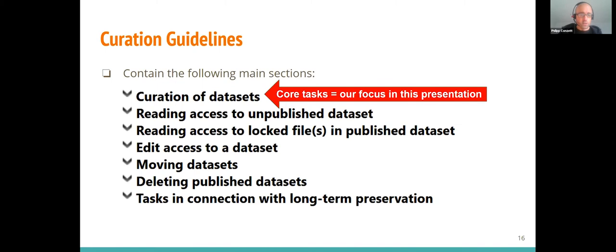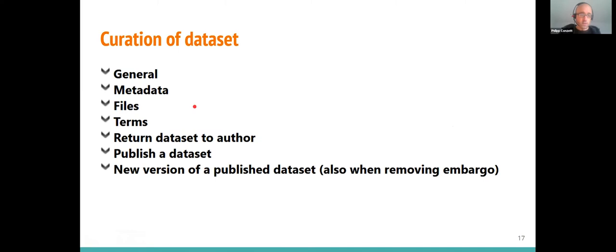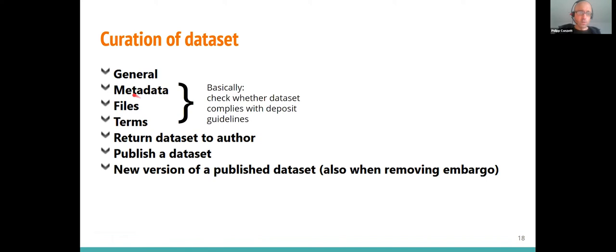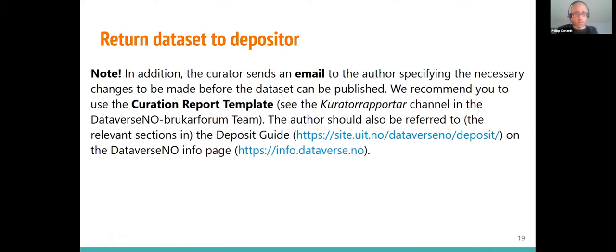The curation guidelines contain these main sections. The first section is about the core tasks of curation: a general introduction, then we talk about the metadata, the files, terms of use or licenses, returning the dataset to the author, publishing the dataset, and how to handle a new version of a published dataset. The metadata, files, and terms of use sections are about checking whether the dataset complies with our deposit guidelines. When we return the dataset to the depositor, we also send an email explaining the changes they have to make.